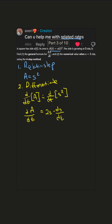Step three: substitute the known rate. We are told that the side is growing at three centimeters per second, so that is dS/dt. So dA/dt equals 2S times three centimeters per second.